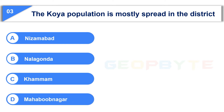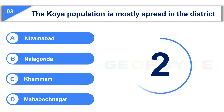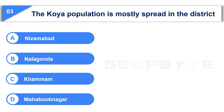Option D: Mahbubnagar. Your time starts now. Your time is up and the correct answer is Option C: Khammam.